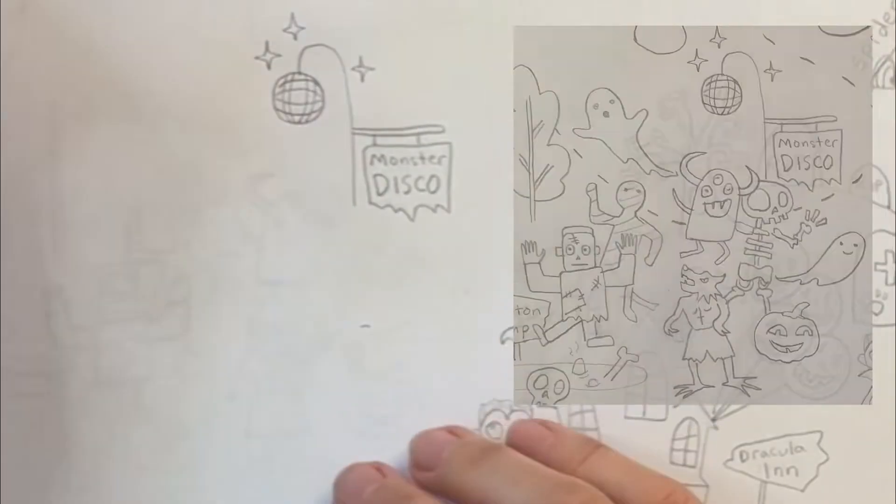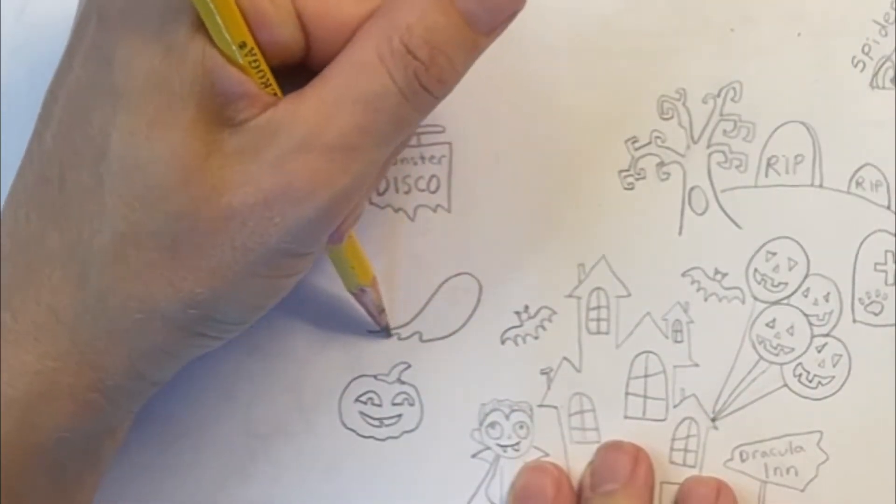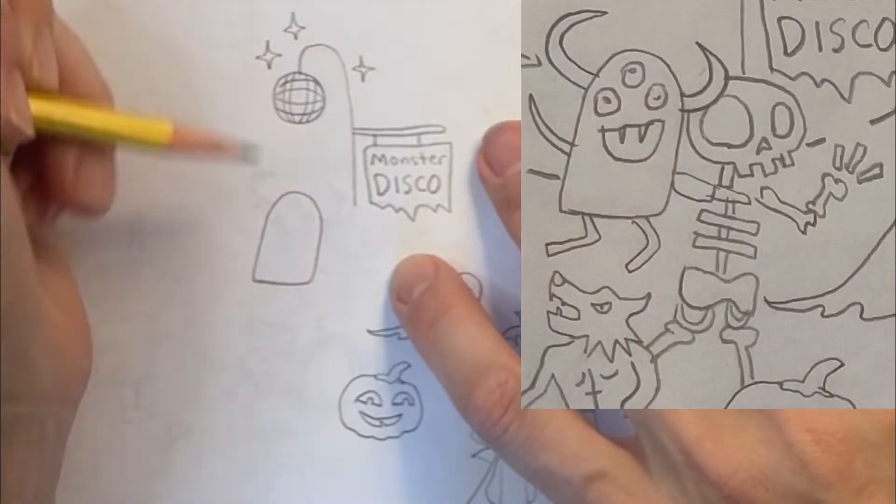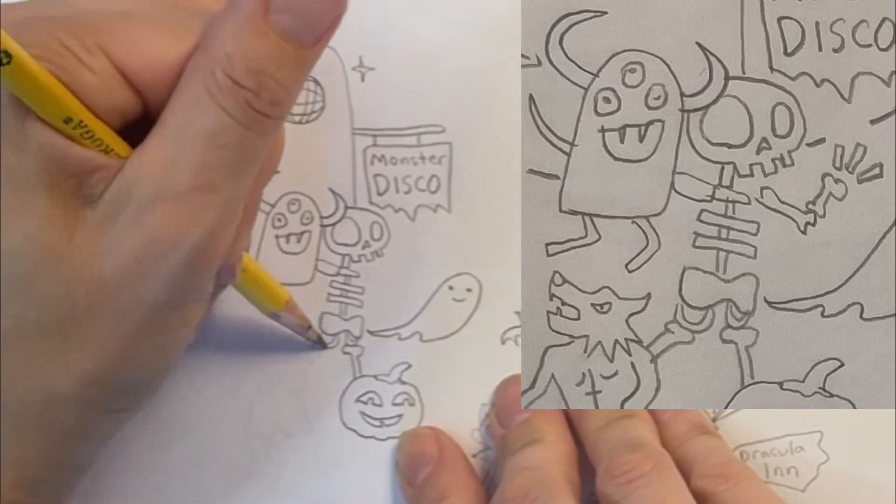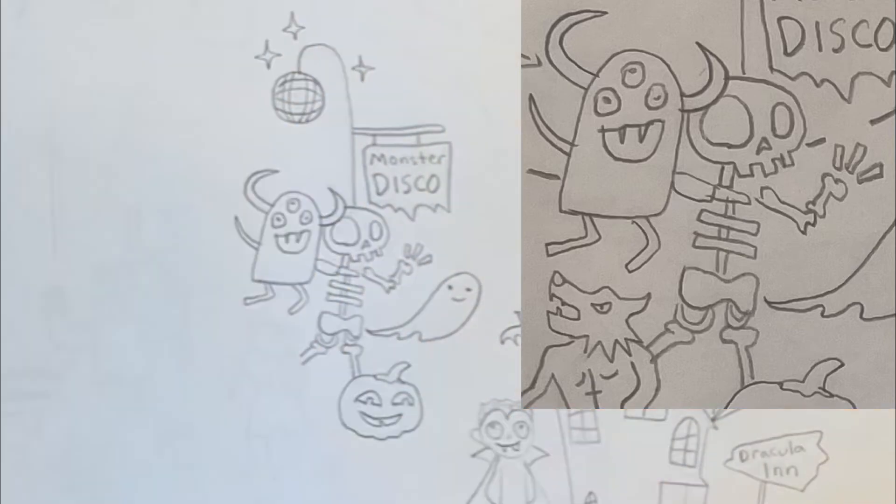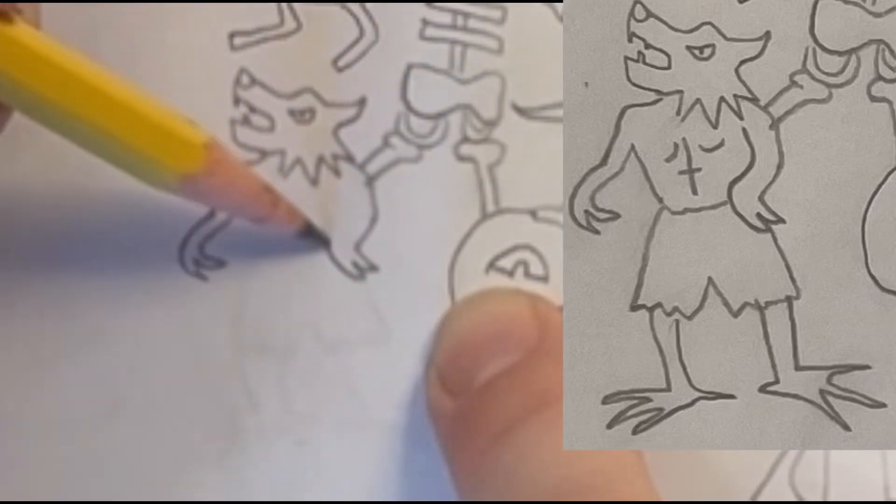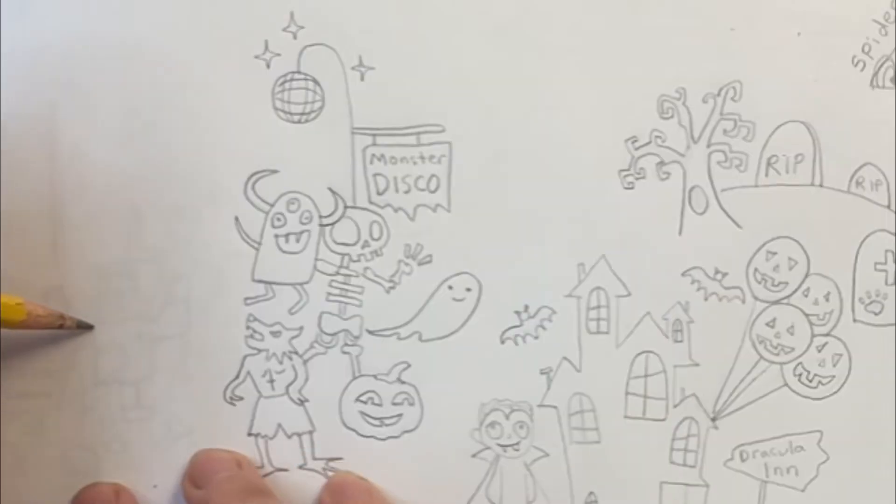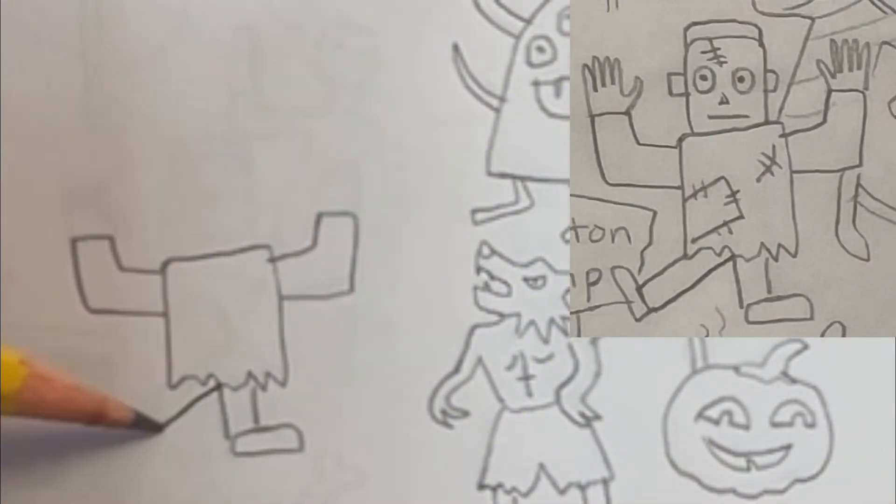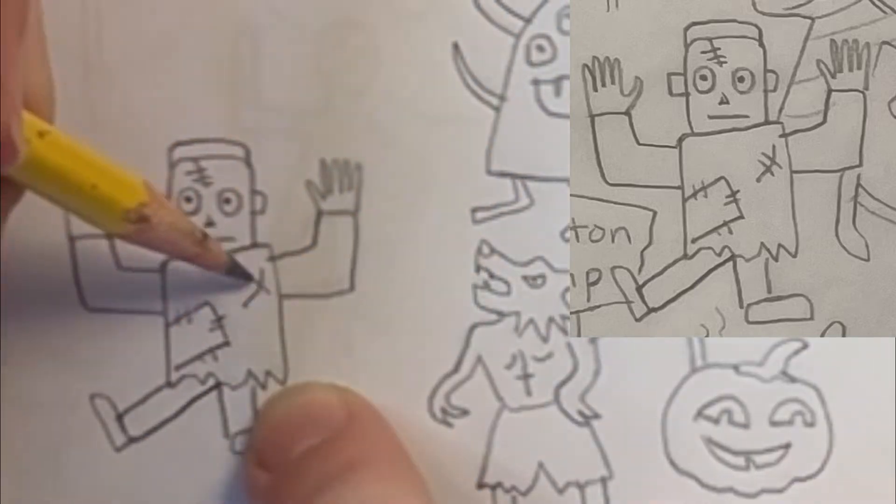Now I'm adding a jack-o'-lantern, a ghost, and some kind of monster. I'm putting a dancing skeleton next to the monster. In front of the monster, I'm adding a werewolf. It basically looks like a furry human with a big wolf head. Over here on the left, I'm drawing a dancing Frankenstein with his arms waving in the air.